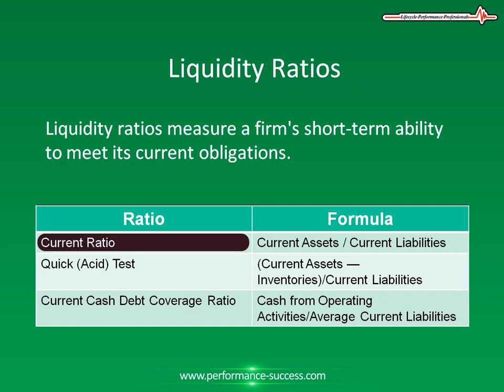The first one is the current ratio. This is current assets divided by current liabilities. The current ratio compares a company's current assets to current liabilities and measures its ability to cover short-term maturing obligations.